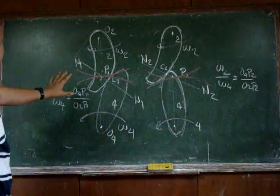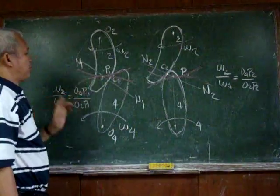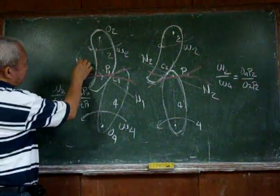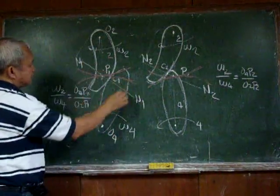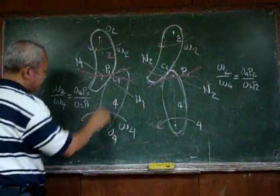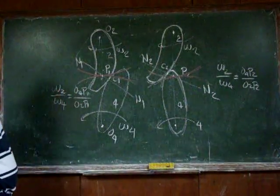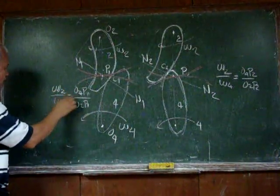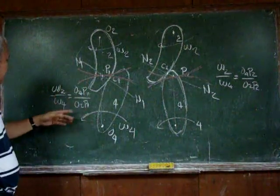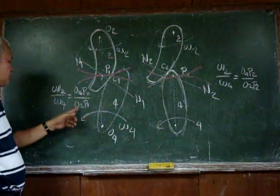In this particular case, we have body 2 engaged with body 4, and there is a point of contact C1, and a common normal to the point of contact. The common normal intersects the line of centers at point P1. It can be shown that omega 2 over omega 4, or the ratio of the velocity of body 2 over the velocity of body 4, is equal to O4P1 over O2P1.